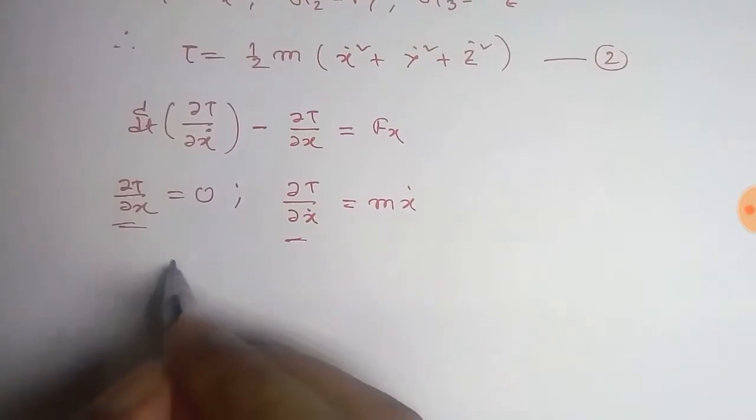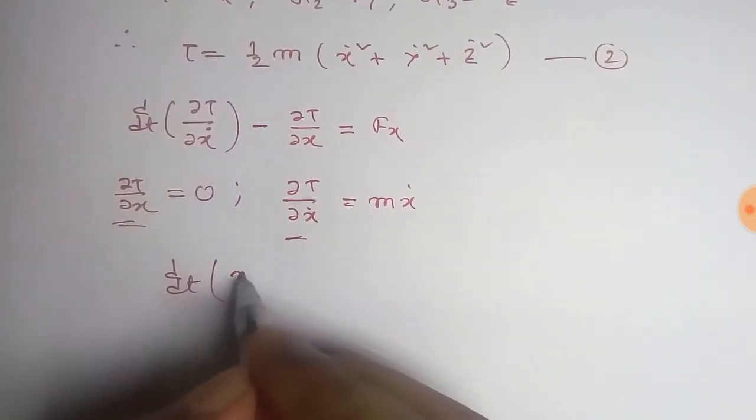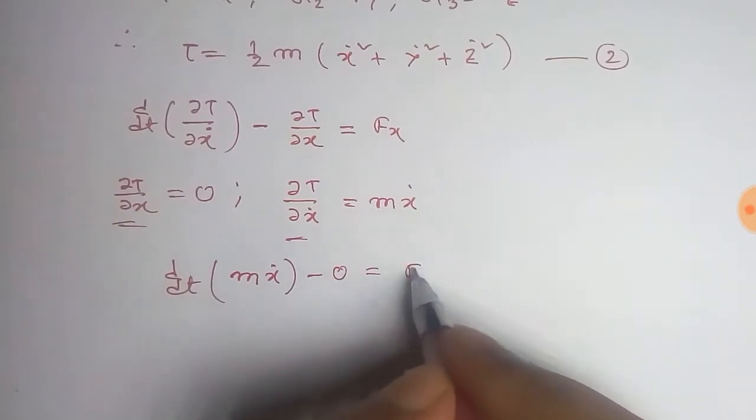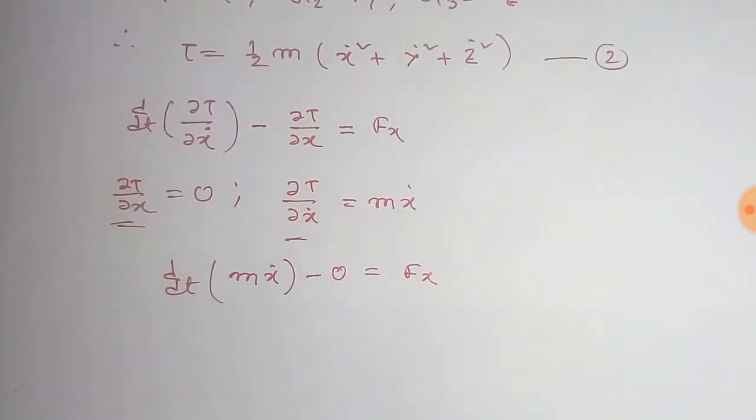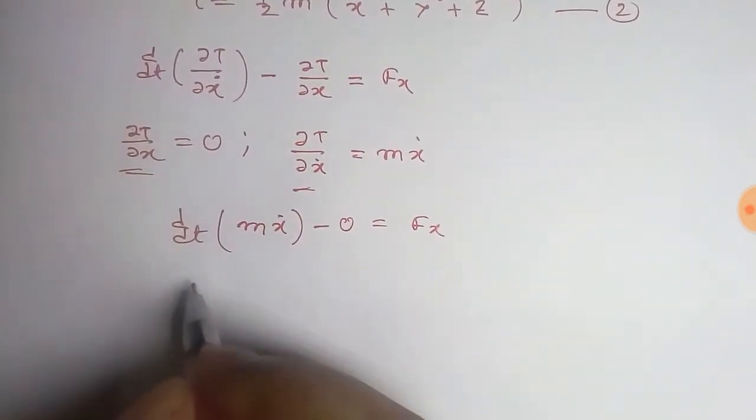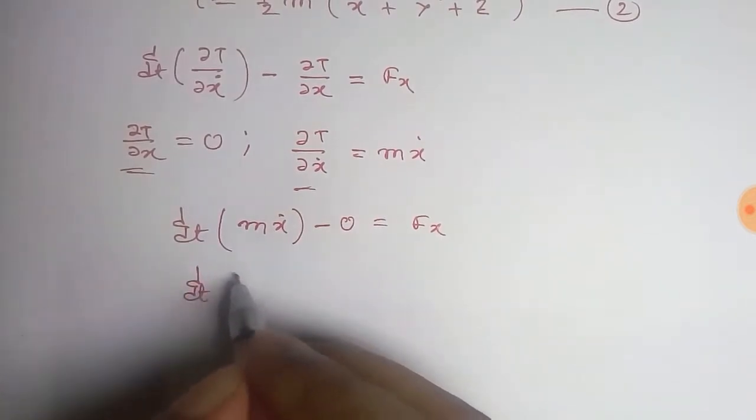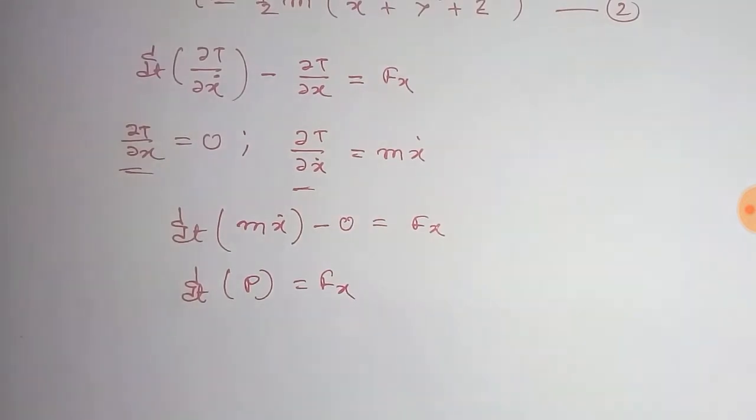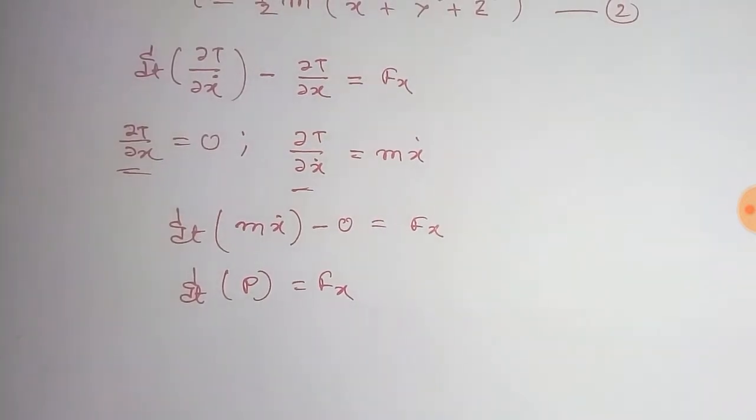Using this value, in that case we get d/dt of mẋ minus zero equals Fx. And from this, d/dt of mẋ is the momentum, so that is px equals Fx. Similarly, taking the y and z coordinates: